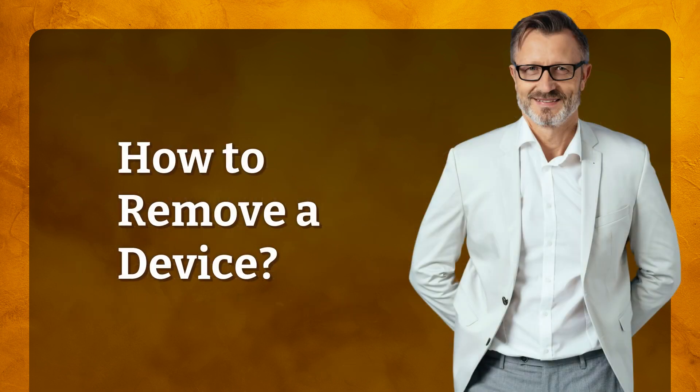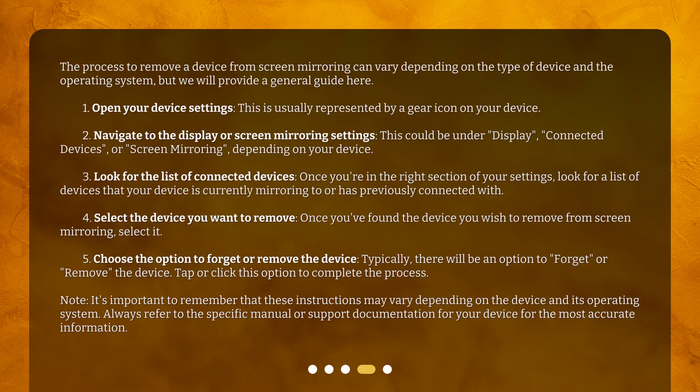The process to remove a device from screen mirroring can vary depending on the type of device and the operating system, but we will provide a general guide here. First, open your device settings — this is usually represented by a gear icon on your device. Second, navigate to the display or screen mirroring settings. This could be under Display, Connected Devices, or Screen Mirroring, depending on your device.